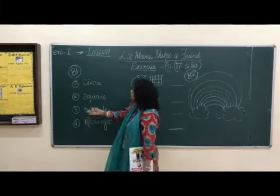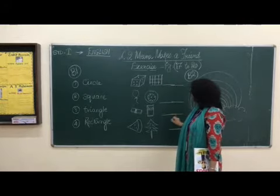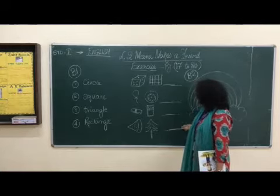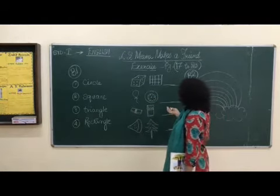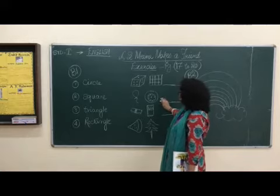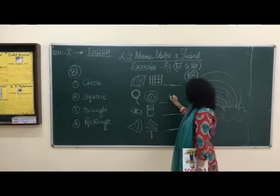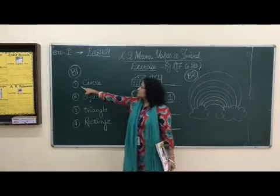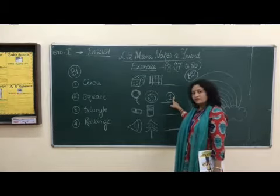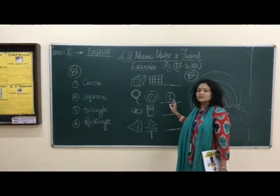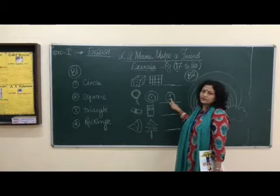Here, numbers are already given to you, so you can write the number on the back side of the object. Number one is circle. We can find objects of a circle shape — a tyre and a round balloon are given. So we will put number one in front of those objects.